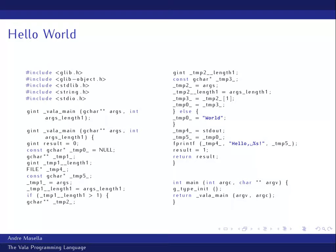Looking at the generated C for the if statement: it creates temp0 as the value to fill from the ternary — either pulling from args or filling with 'world.' Then it calls fprintf on stdout with that value. The C compiler converts everything to single static assignment and the optimizer goes to work, so none of the copying things around a million times matters at all.